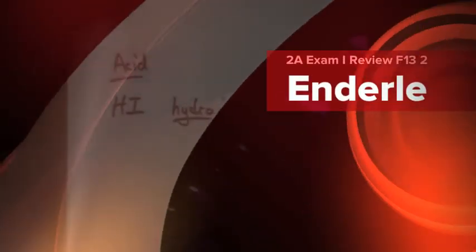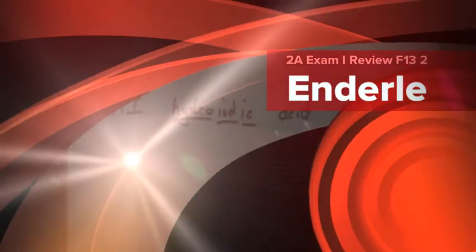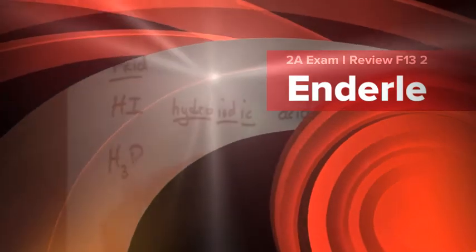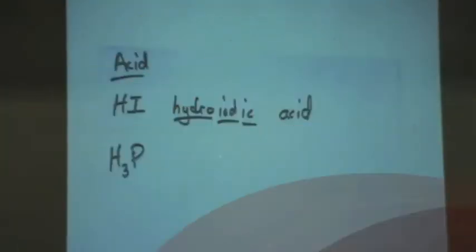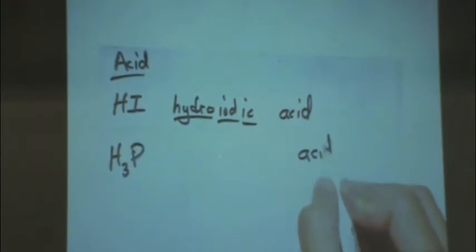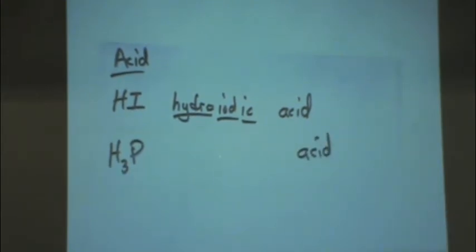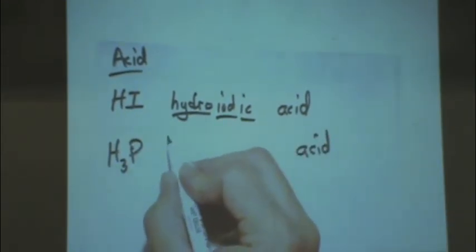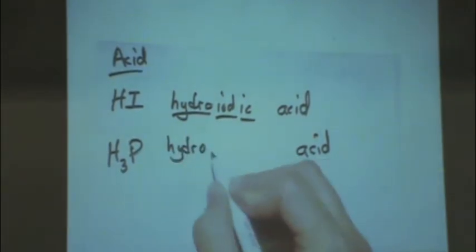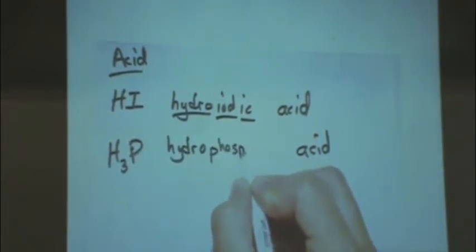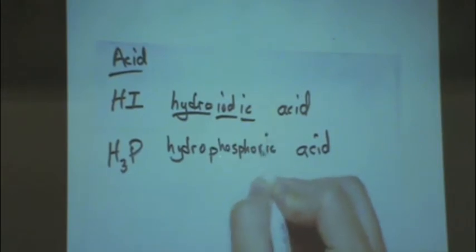So if you get something like that and you get acids, these are all aqueous conditions. You can always write acid and you're going to get half credit already. There's just two different types of elements, hydro phosphoric acid.